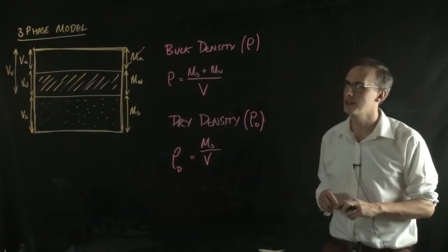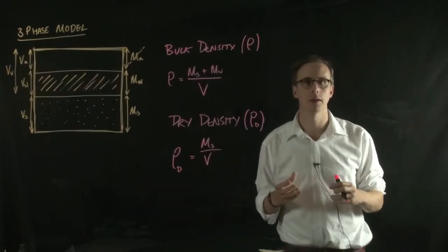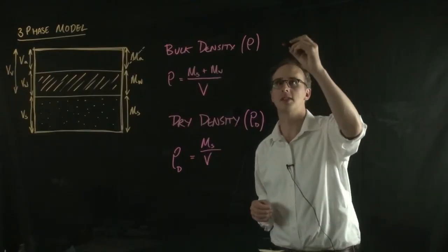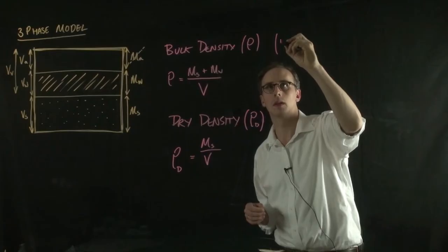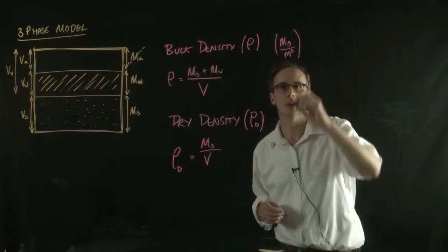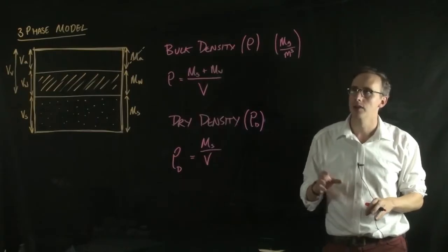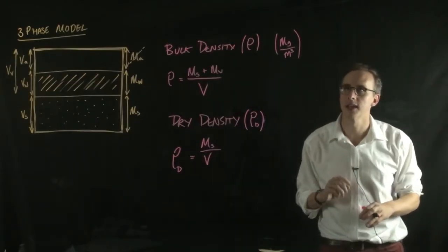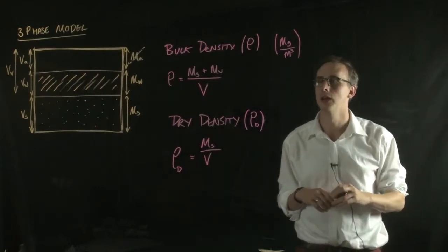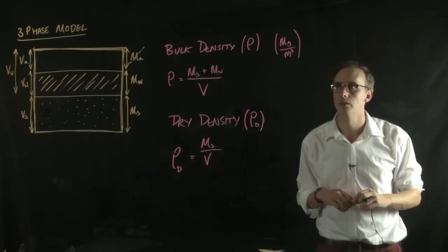Now both of these are given the units of megagrams per meter cubed, so mass over volume. And we use the units of megagrams per meter cubed because when we turn that into a force, it becomes kilonewtons per meter cubed. And that's quite a useful unit for soil mechanics.